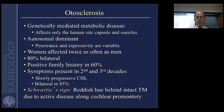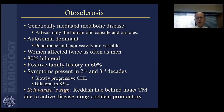What conditions do we often see at the level of the oval window? Otosclerosis is a good example. This is a genetically mediated metabolic disease that affects only the human otocapsule and ossicles. It's autosomal dominant with variable penetrance and expressivity. Women are affected twice as often as men, and 80% of the time it's bilateral.